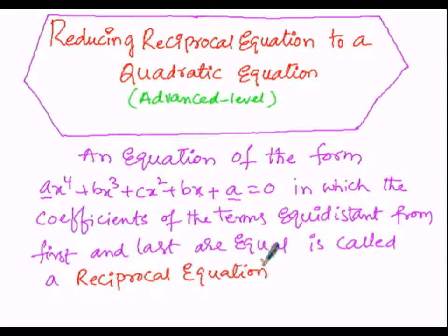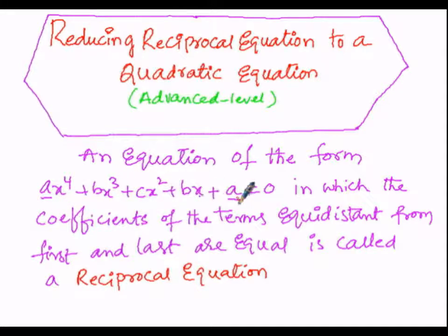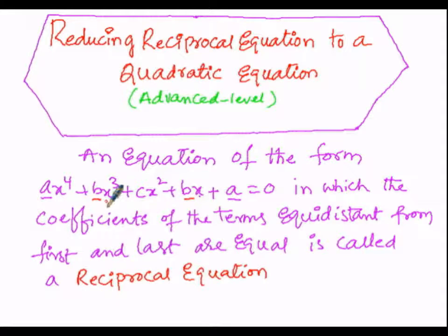In the general form ax⁴ + bx³ + cx² + bx + a, the coefficient of x⁴ is a, the coefficient of x³ is b, the coefficient of x² is c, the coefficient of x is b, and the constant is a. The first and last coefficients are both a — they are equal. Similarly, the second and second-to-last coefficients are both b — they are equal. Such an equation is said to be a reciprocal equation.